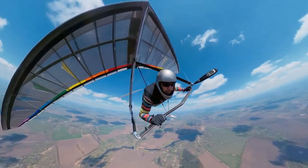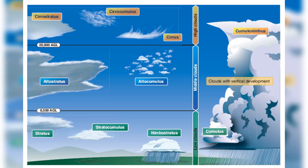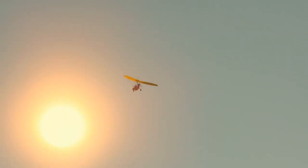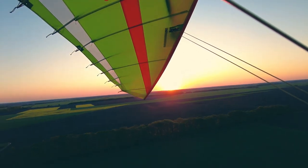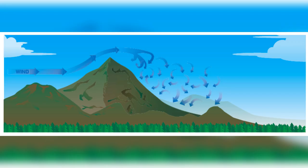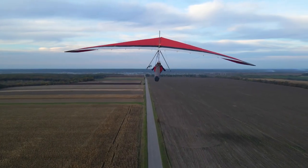Clouds, those visual narrators, offer crucial cues. Understanding diverse cloud formations and adhering to cloud clearance requirements in each airspace class is paramount. Mechanical turbulence is akin to a concealed orchestra — objects create turbulence on their lee side, amplified by the wind. This turbulence can reach up to 10 times the height of the object; the stronger the wind, the more pronounced the turbulence.